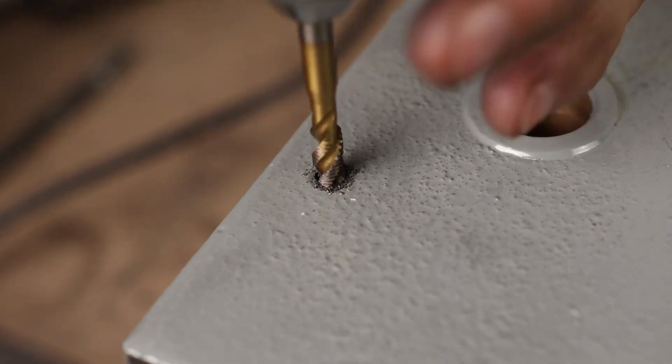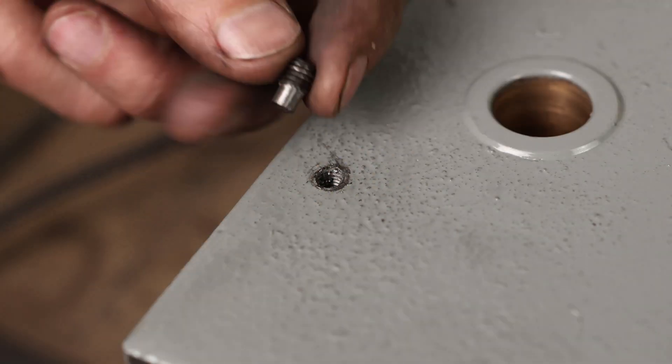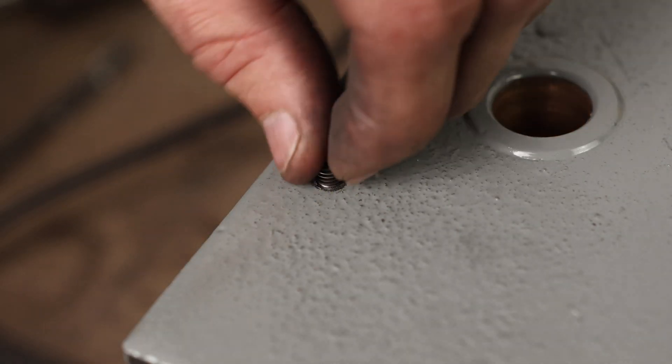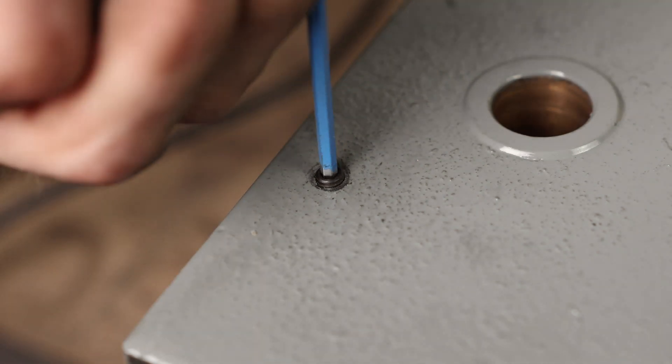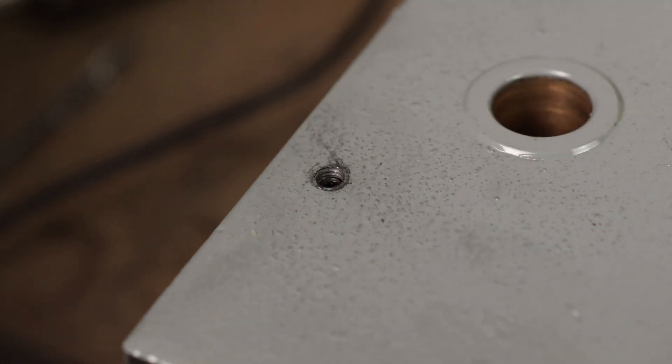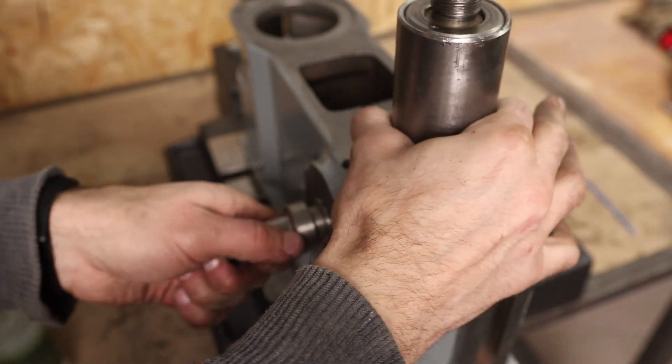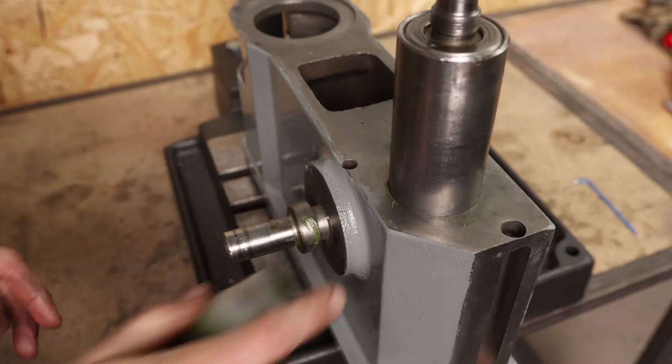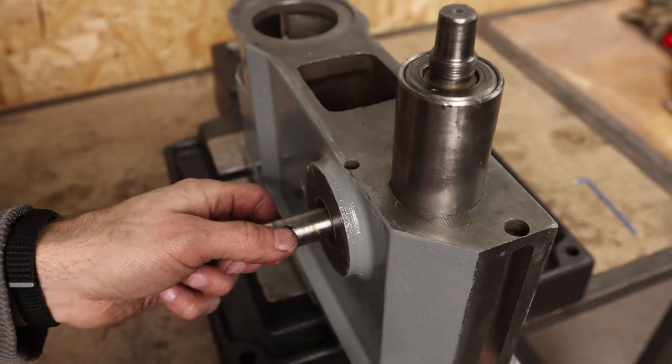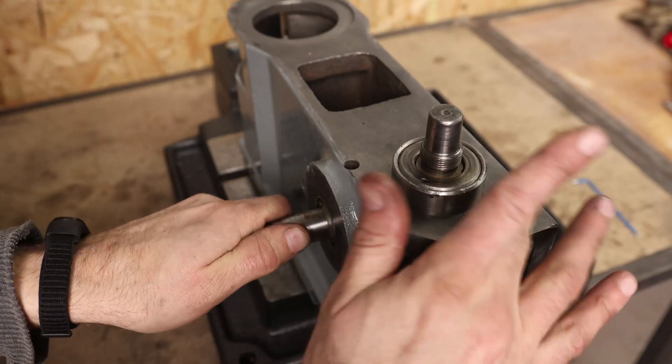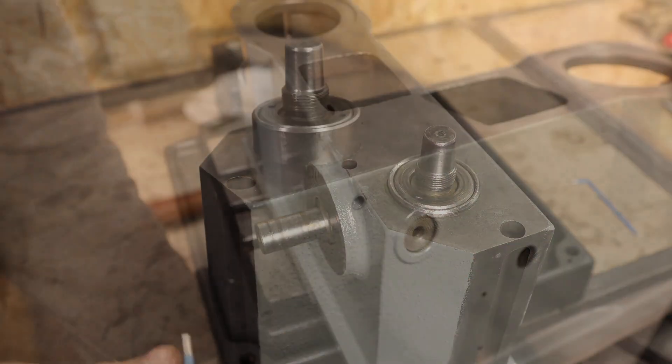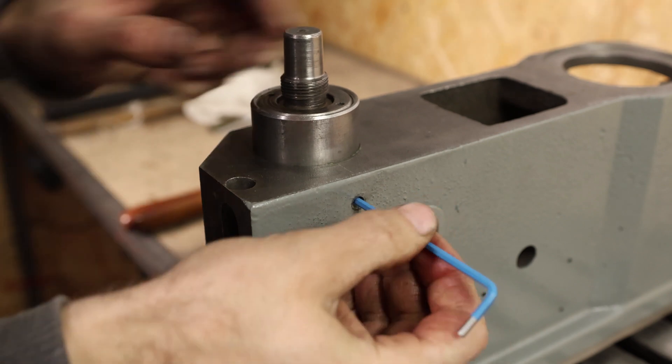Tapping cast iron is second best thing I like to tap after aluminum. Anyway, I made this setscrew using drill and belt grinder.